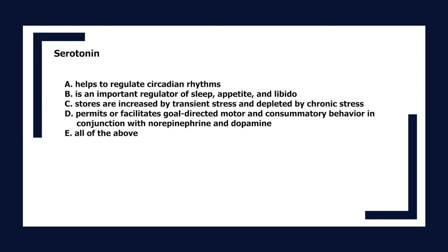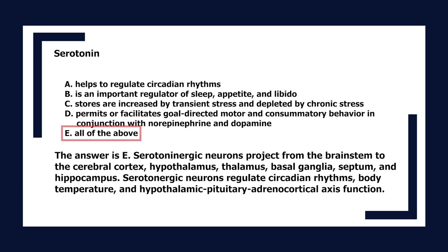Regarding serotonin: A. Helps to regulate circadian rhythms. B. Is an important regulator of sleep, appetite, and libido. C. Stores are increased by transient stress and depleted by chronic stress. D. Permits or facilitates goal-directed motor and consummatory behavior in conjunction with norepinephrine and dopamine. E. All of the above. The answer is E. Serotonergic neurons project from the brain stem to the cerebral cortex, hypothalamus, thalamus, basal ganglia, septum, and hippocampus, regulating circadian rhythms, body temperature, and hypothalamic-pituitary-adrenocortical axis function.